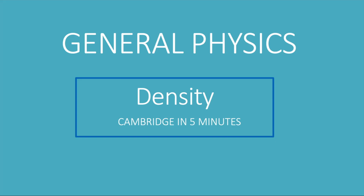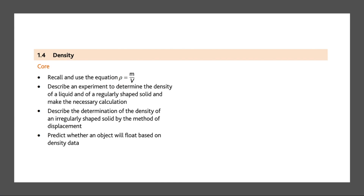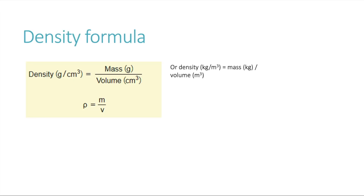Hey guys, welcome to another video. Today we're going to be going through the topic of density. The formula for density is mass divided by volume. Depending on what units you use for mass and volume, that will give you the units of density. For example, using mass in grams and volume in centimeters cubed gives density in grams per centimeters cubed, but you could also use kilograms and meters cubed, giving kilograms per meters cubed.